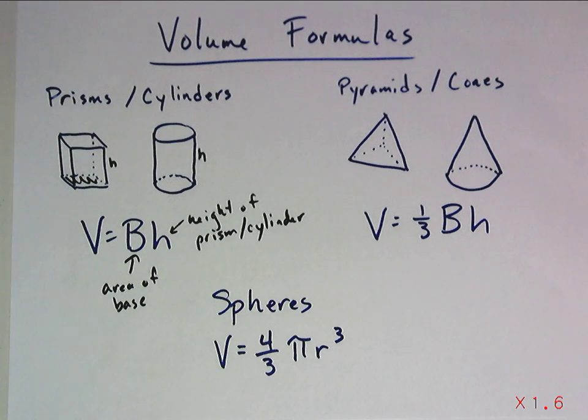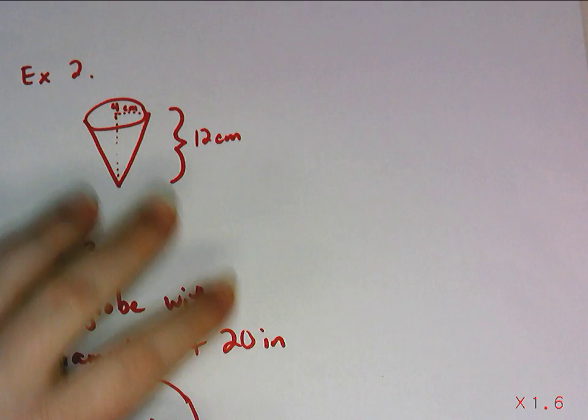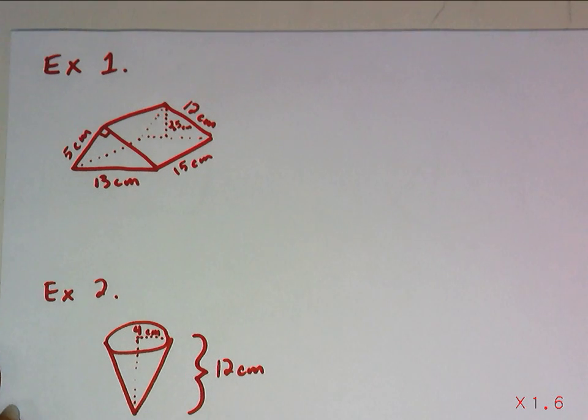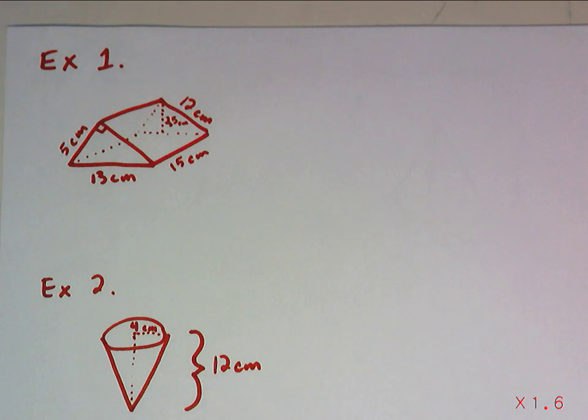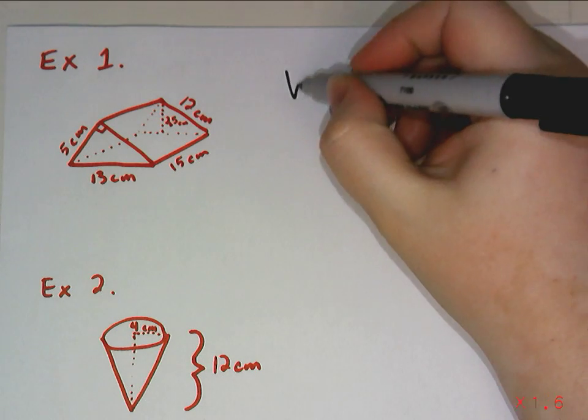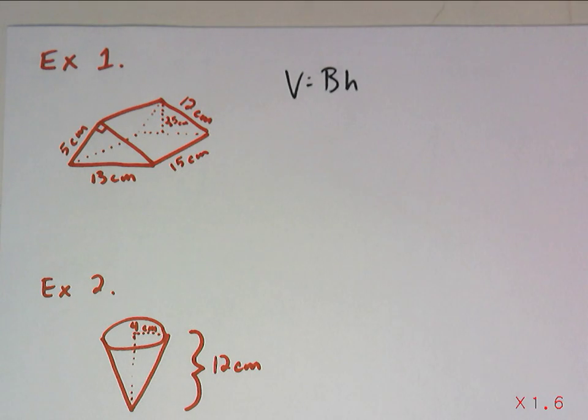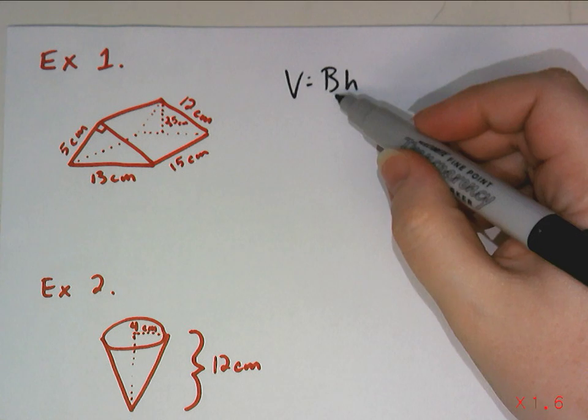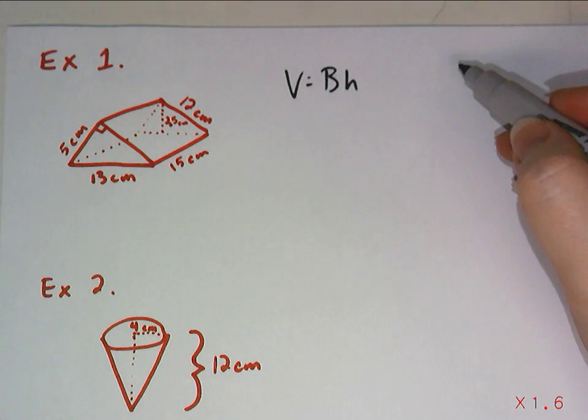Let's do some examples. So example one here, if we take a look, I hope you can tell what shape that is. That is a triangular prism. I've laid out all of the measurements for you. And if we want to find the volume of the shape, we're going to need to remember that for a prism, the volume formula is capital B, base, area of the base, times h for height of the prism.